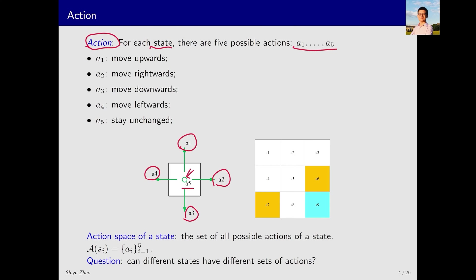When all these actions are combined, we obtain the action space. Like before, this is essentially a set, represented by A, which includes all possible actions. It's important to note that the action space is dependent on the state. This means that the action space varies across different states. Therefore, we denote it with a parenthesis, SI, indicating that A is a function of SI.